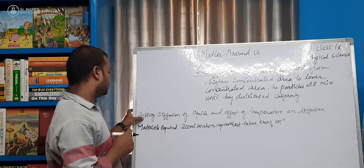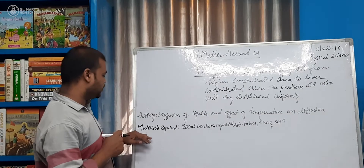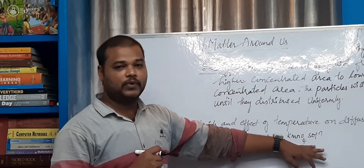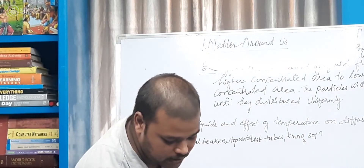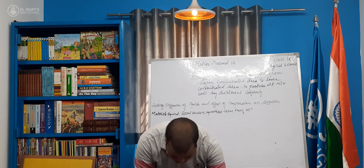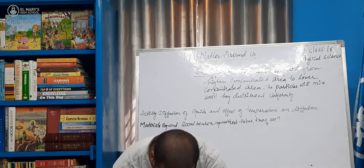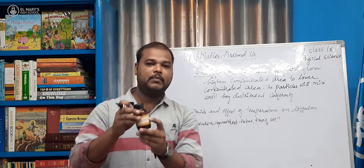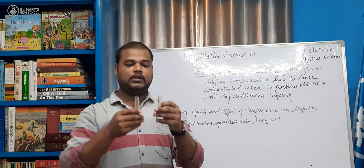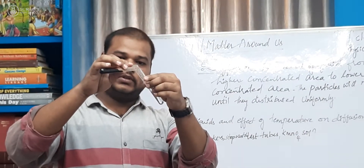So now we shall go for Activity 1: Diffusion of Liquids and Effect of Temperature on Diffusion. For this, we need the materials: 200 ml beakers, stopwatches, test tubes, and KMnO4 — this is potassium permanganate solution. We are taking two test tubes, both half filled with water, and we have potassium permanganate crystals.